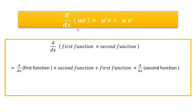This is the product rule. Let u be one function and v be the second function, and you are asked to calculate the derivative of u multiplied by v. First, you calculate the derivative of the first function u, written as u', multiplied by the second function v as it is. Plus, the first function u as it is, multiplied by the derivative of the second function v'. So d/dx(u·v) = u'·v + u·v'.